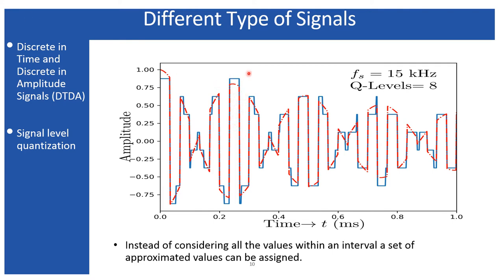Comparing the two signals, for the DTCA signal the amplitude was continuous within any specific interval, while for the DTDA signal the amplitude is quantized to certain discrete levels. However, such discretization introduces certain errors — this is the quantization error. The actual data points exist within a range, but we are assuming the data point is at a fixed level. This quantization error increases when the sampling time is higher and the quantization level remains small.